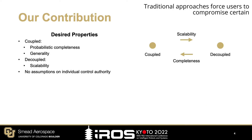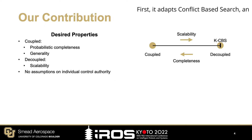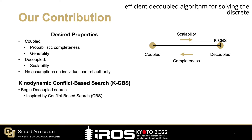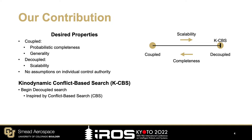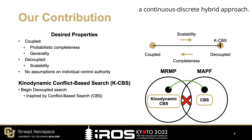Traditional approaches force users to compromise certain desired properties in place of others. Our work, however, is different. First, it adapts conflict-based search, an efficient decoupled algorithm for solving the discrete analog of MRMP, known as multi-agent pathfinding, to solve the MRMP problem. This adaptation is done natively in the continuous domain, rather than using a continuous-discrete hybrid approach.